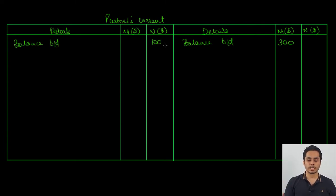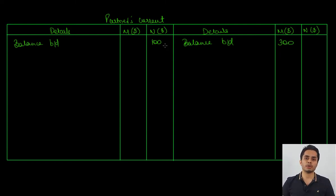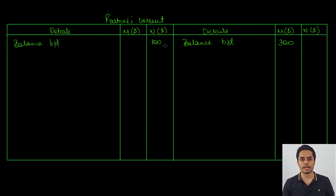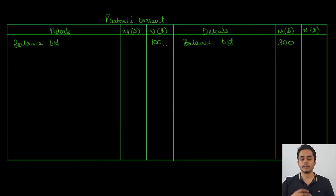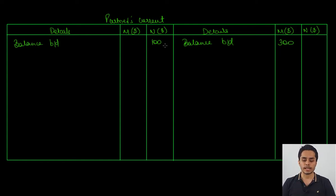Let us complete the credit side of the partner's current account. Students often get confused about what appears on each side. A simple rule: whatever the firm has to compensate or pay to the partner goes on the credit side. For example, salary paid by the firm to the partner — credit side; interest on capital paid by the firm to the partner — credit side; share of profit paid by the firm to the partner — credit side. Let us record these entries on the credit side.